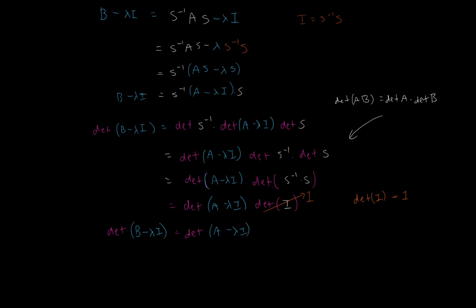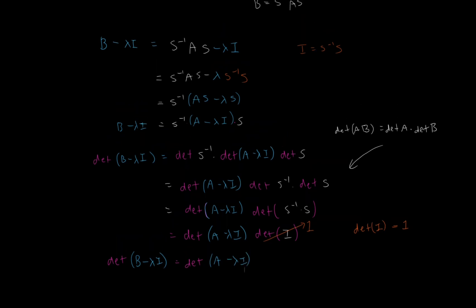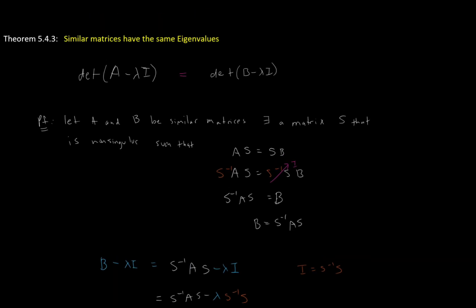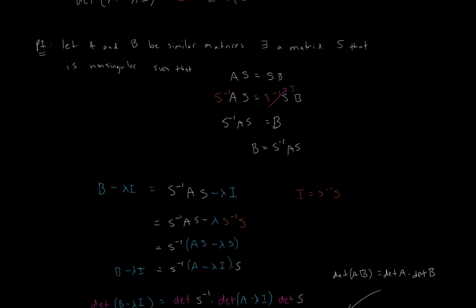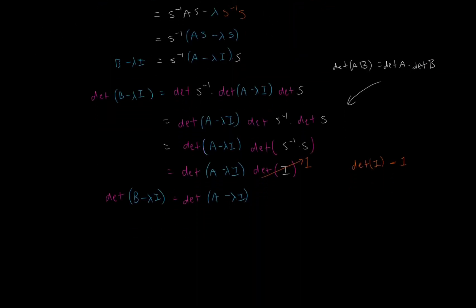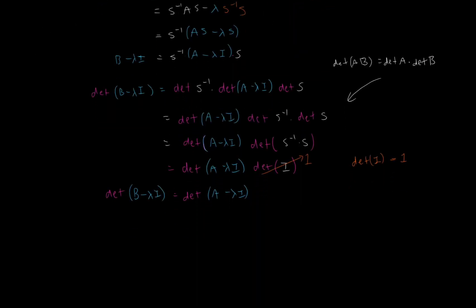And that was our goal — to show that these two characteristic polynomials are equal to each other. The determinant of B minus lambda I equals the determinant of A minus lambda I. This gives us the eigenvalues of B, and this gives us the eigenvalues of A. So they are equal to each other, so the eigenvalues are equal. This all started with us assuming that two matrices were similar. A and B are similar, and we concluded they have the same characteristic polynomial, therefore the same eigenvalues. Therefore, this proof is done.